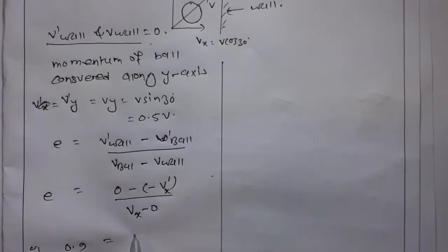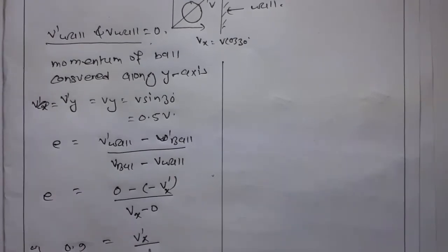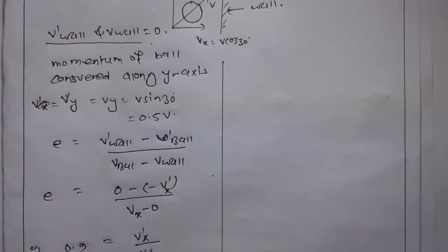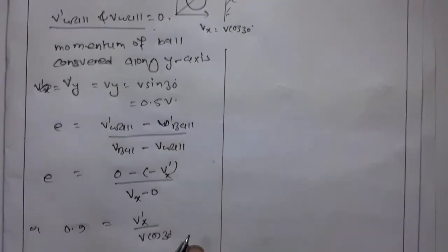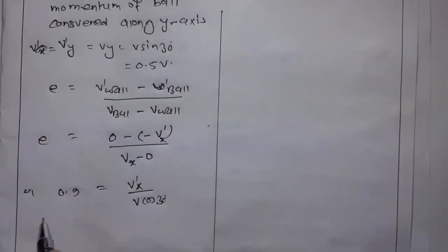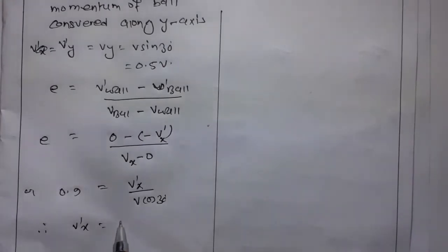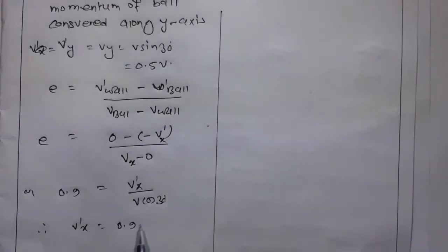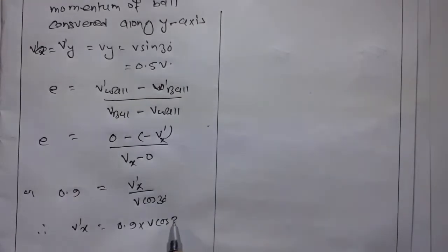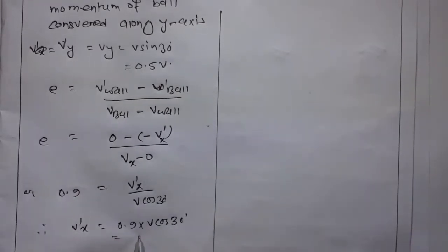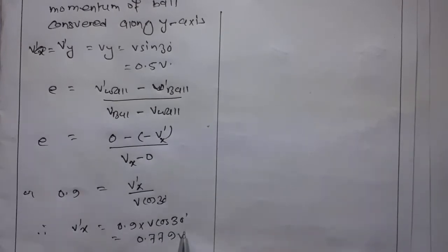So 0.9 = v'_x/v_x, where v_x = v cos(30°). Therefore v'_x = 0.9 × v cos(30°) = 0.779v.